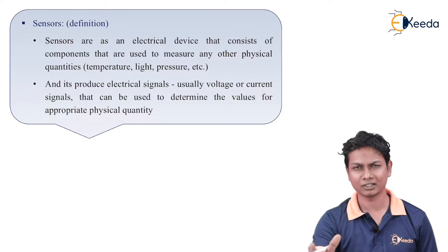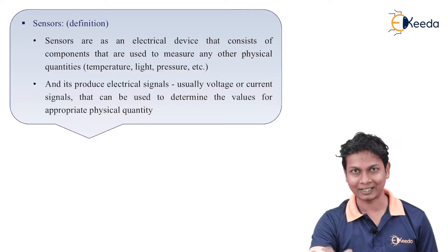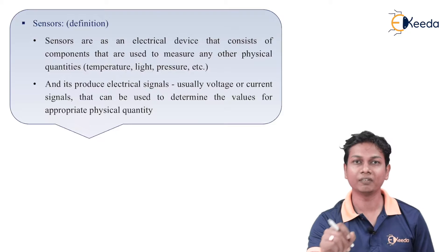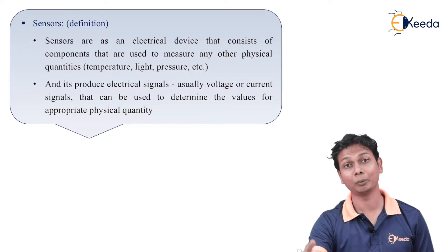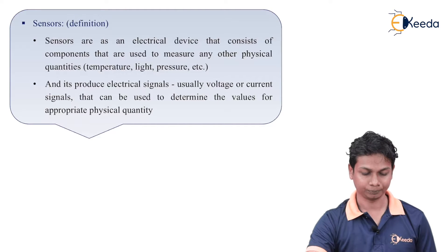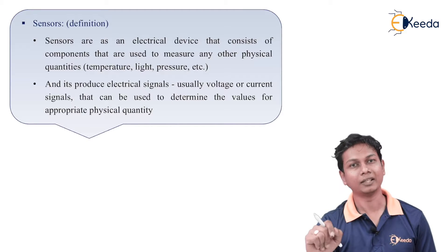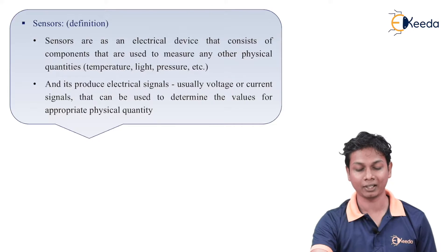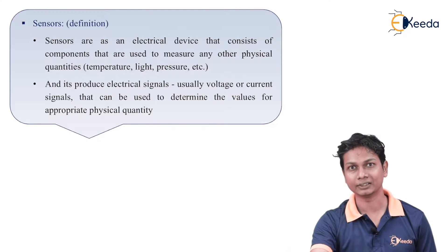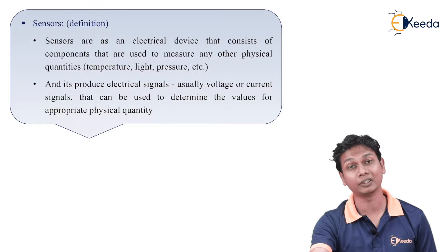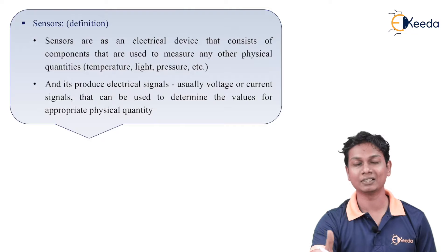What is the definition of a sensor? It is a simple definition. A sensor is an electrical device that consists of components used to measure physical quantities. The physical quantities can be temperature, light, or pressure. The electrical signal is usually either voltage or current, and that current or voltage signal is used to determine the values of appropriate physical quantities. If the physical quantity is sensed, that has to be converted into voltage or current. So the device is a sensor.